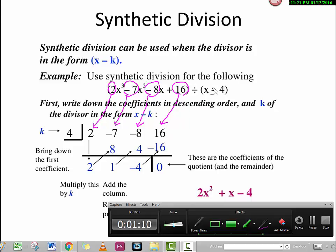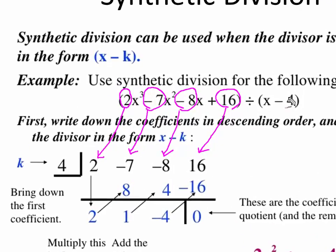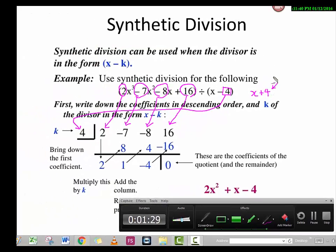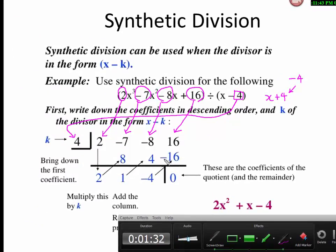Now we write the divisor. Remember the format is x minus k, so we pick k. In this example k is 4. But if the factor is x plus 4, then because the format is x minus k, k would be negative 4. Once set up, the format here represents the division sign, just like long division.